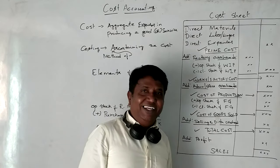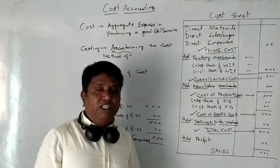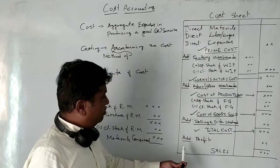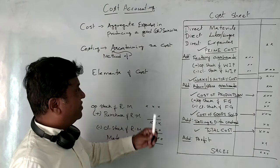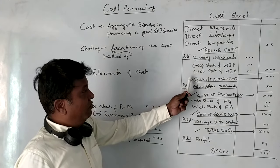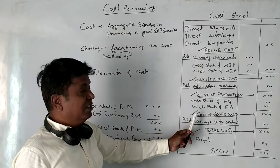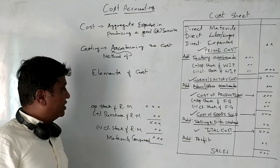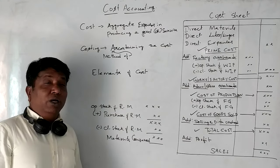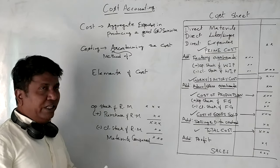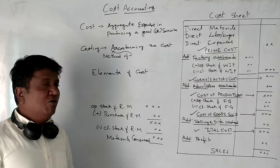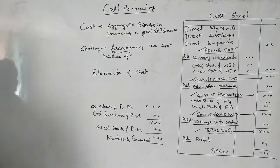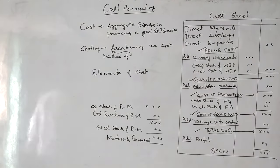Now we have a cost sheet and a statement of cost and profit. So to summarize, the elements of cost are Prime Cost, Works Cost, Cost of Production, Cost of Goods Sold, and Total Cost. These are the basic terms. We will look at examination questions next.